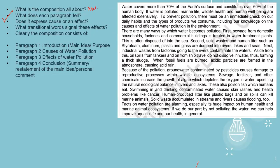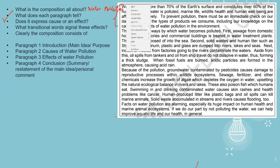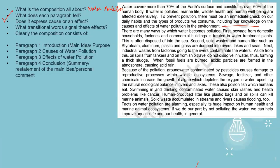Our answer is water pollution. Number two: what does each paragraph tell? Let's go to paragraph number one first. You will know a paragraph has ended because you will see a big space before the next paragraph begins. Let's read the paragraph again. Water covers more than 70% of the Earth's surface and constitutes over 60% of the human body. If water is polluted, marine life, wildlife, health, and human well-being are affected extensively. To prevent pollution, there must be an immediate check on our daily habits. So the paragraph ends here. What exactly is the topic of paragraph number one?